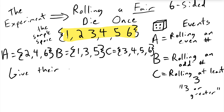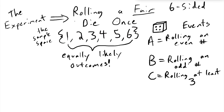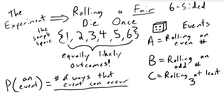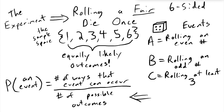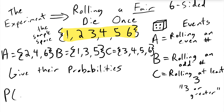Because we have equally likely outcomes and this isn't a weighted die, we can find the probability of any event by counting: we count the number of ways that event can occur and divide by the number of possible outcomes. Because we're dealing with the same experiment every time, the total number of possible outcomes is six. How many ways can A happen? Three. So the probability of A is three over six.